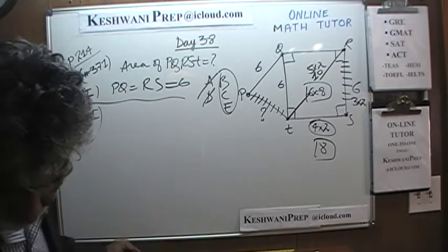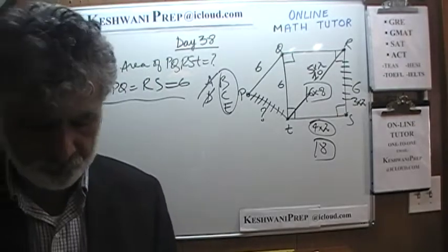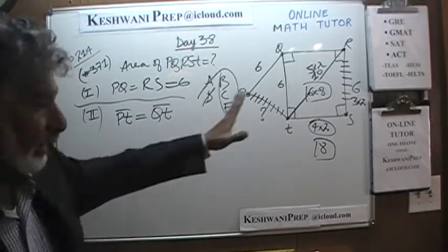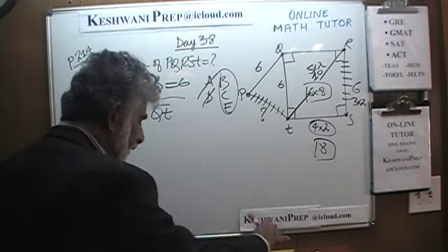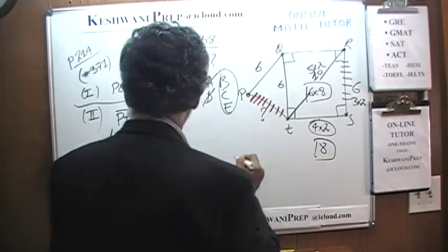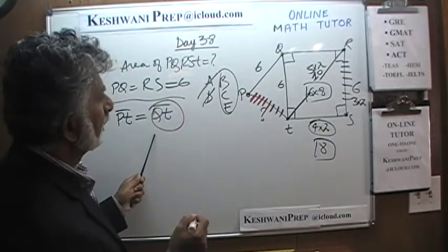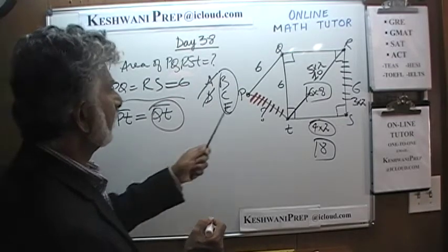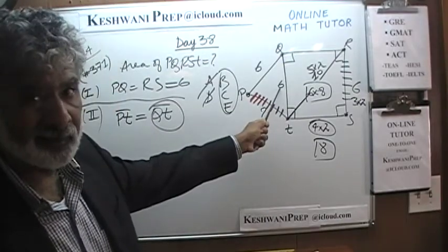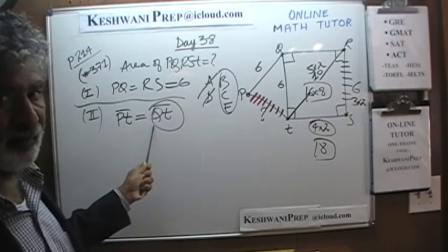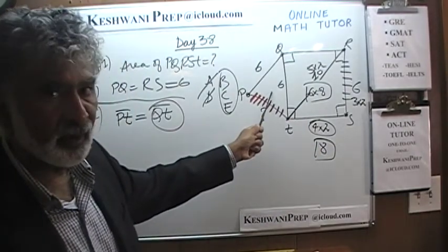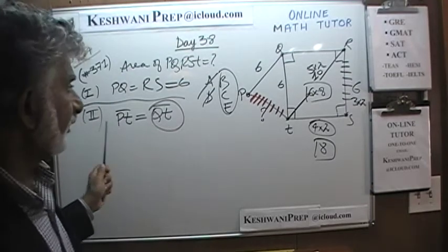The second statement tells us that PT is the same length as QT. I'm going to put it in red ink. P to T is the same as Q to T. But again, by itself — not looking at the first statement — all we know is that this length is the same as that length, but we don't know what that length is. That number came from the first statement. So the second statement alone: we cannot figure out the area of the rectangle nor the area of the triangle. It is not enough. The answer is not B.